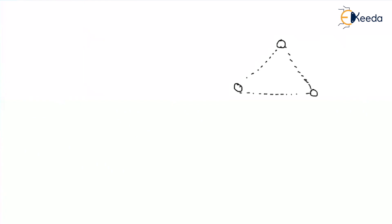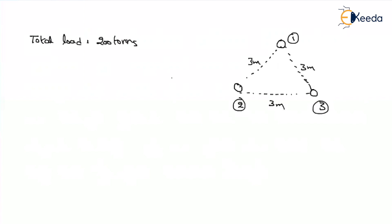If I represent the given data: how many legs are there? Three legs, forming a triangular shape. Let us consider leg 1, leg 2, and leg 3, each side being 3 meters. What is the total load acting? Total load is 200 tons. So what about the load on each leg? The total load is distributed through these three legs, so load on each leg equals 200 divided by 3, which is 66.67 tons.